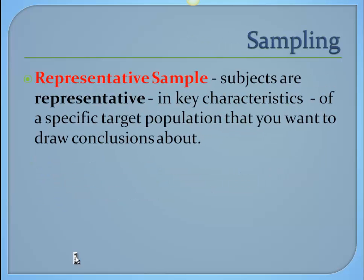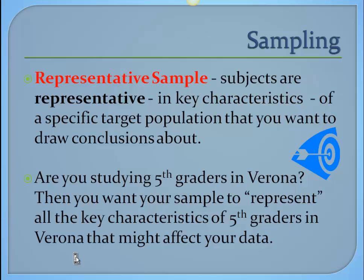Here are some specific factors you want to know. A representative sample means the sample is going to be similar in key characteristics to our target population. For example, if we're studying fifth graders at Verona, we want our sample of, say, 50 students to represent the key characteristics of all fifth graders in Verona — say that's 400 students.